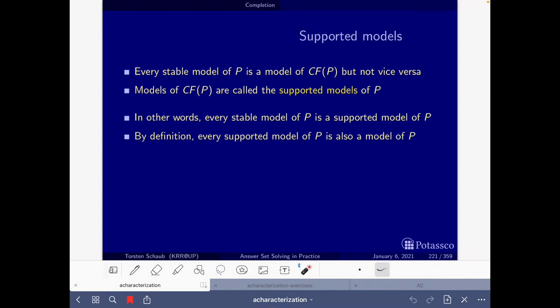Then something that is important is to have a look at this slide that tells us that the models of the completion are called supported models, and it's important that every stable model is a supported model of P. So what we are going to do in the exercise is find the models of the completion, that is the supported models, and then given that every stable model is a supported model, we will select among those supported models which are stable.